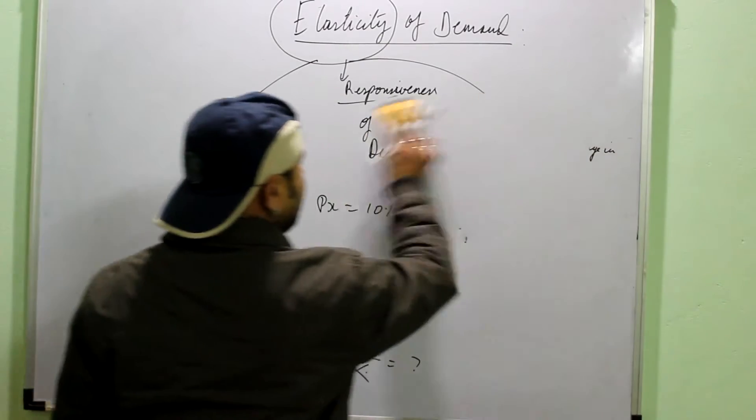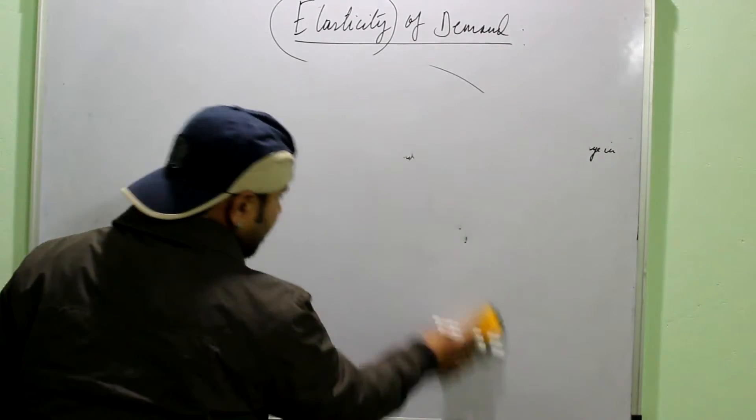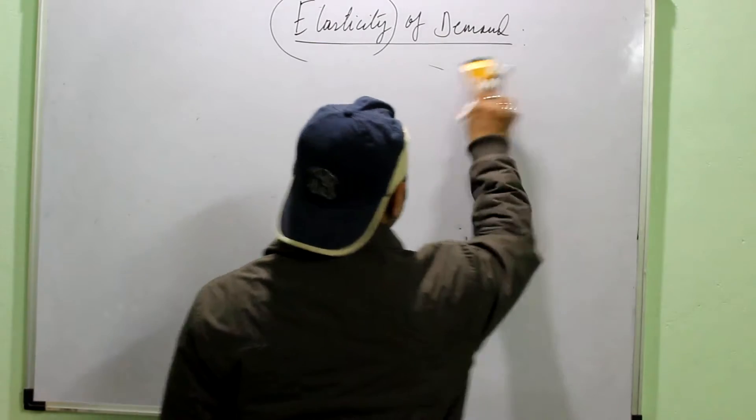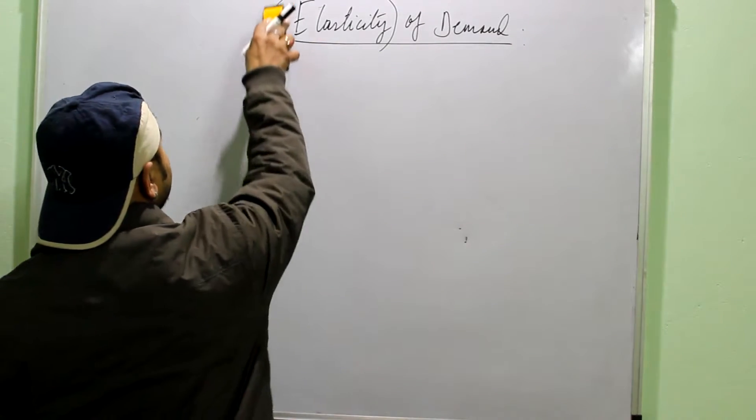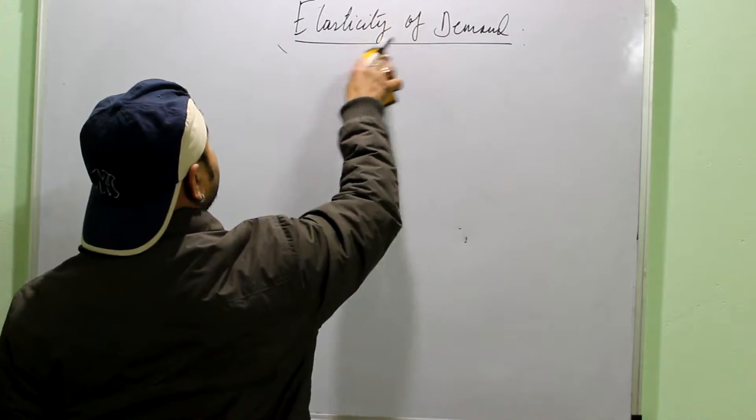And why I am converting them into percentage? Because ratio can be calculated only when the units are same. Otherwise, price will be in rupees and the quantity will be in units.